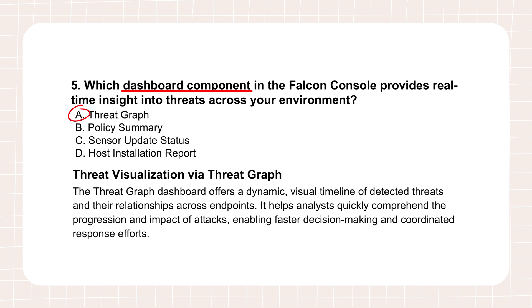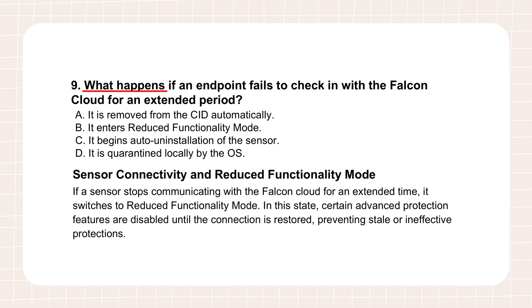Thinking about the endpoints themselves — the sensors. Question nine asks what happens if one stops checking in with the Falcon cloud for a while. According to answer B, it enters reduced functionality mode. The explanation says some capabilities get limited — it doesn't stop working entirely usually, but it's lost that constant connection to the cloud brain. It might lose access to the very latest threat intelligence updates or real-time cloud-based machine learning analysis, falling back to more basic signature detection or previously known policies. Things like real-time response obviously won't work if it's not connected. It's basically the sensor raising a flag saying it's not fully connected or managed right now — alerting the security team that this endpoint needs attention. It's a host health status indicator.